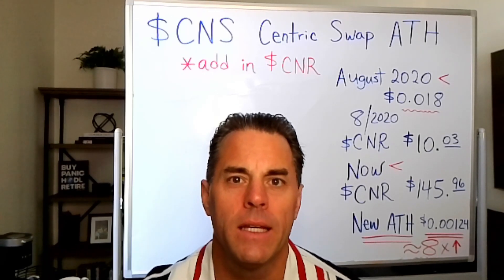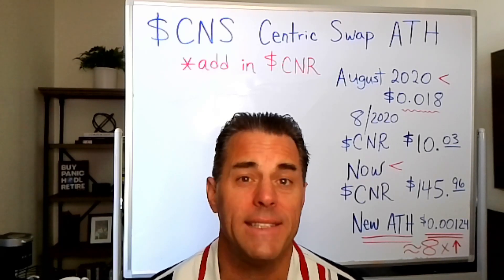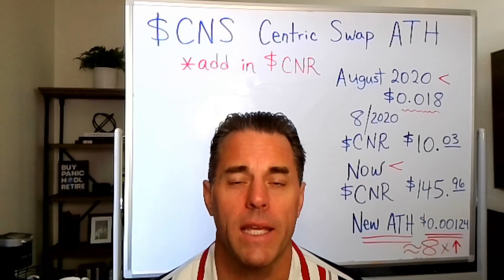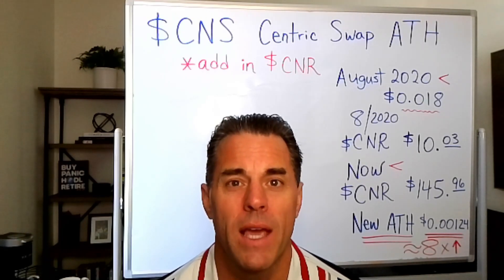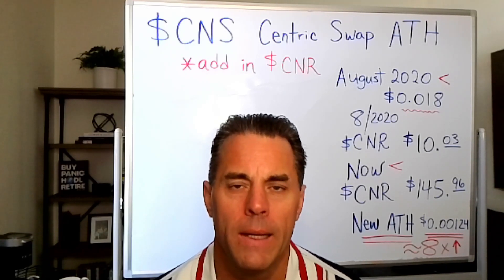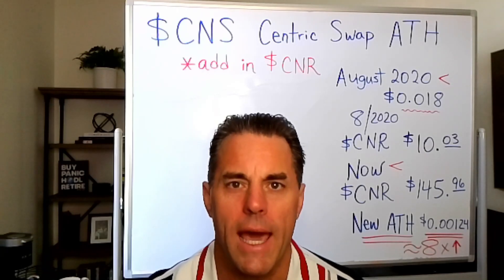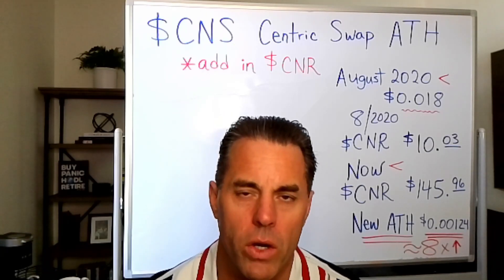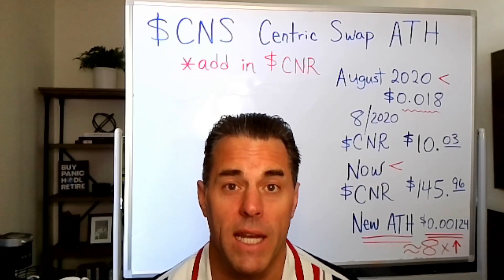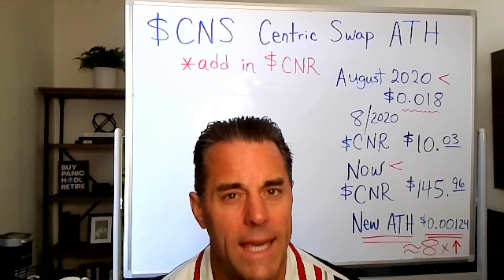Hello everybody, today we're going to talk about all-time high, or ATH, and what we're really getting to is how do we calculate the all-time high for Centric. Because most of the places in the market, like CoinMarketCap or CoinGecko, they only focus on Centric Swap CNS, but because we're a two-token system, we can't forget to figure in Centric Rise.